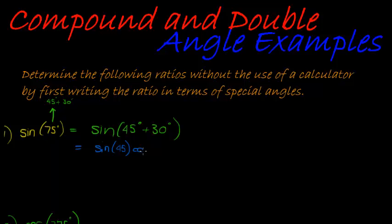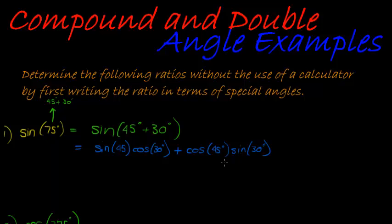cos of 30 degrees, same sign — that's a plus — different ratios, so this must be cos of 45 degrees and sine of 30 degrees. Just make sure that sine 45 and sine 30 are included, and cos 30 and cos 45. Don't swap sine and cos in both angles as well.